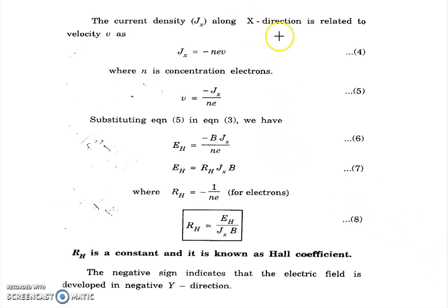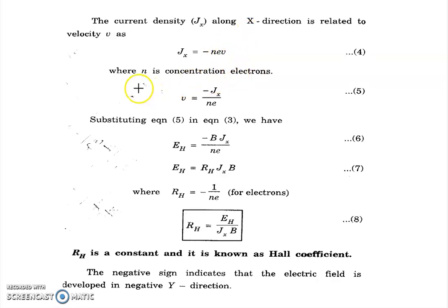The current density along the plus x direction is JX equals minus NEV, where N is the electron concentration, E is the charge of the electron, and V is the drift velocity. Therefore V equals minus JX divided by NE. Substituting into the Hall field equation, EH equals minus B times JX divided by N.